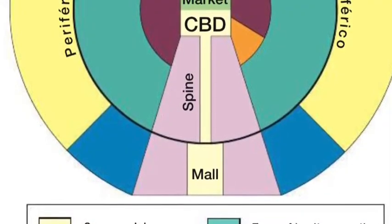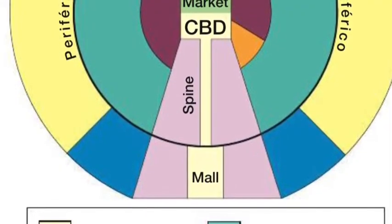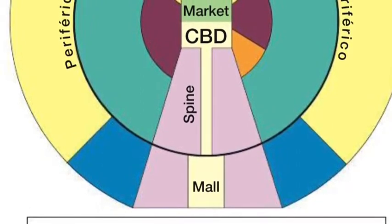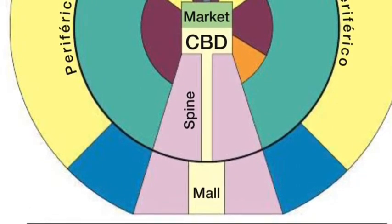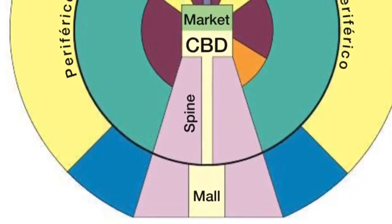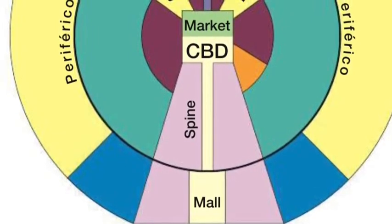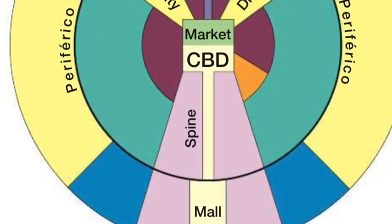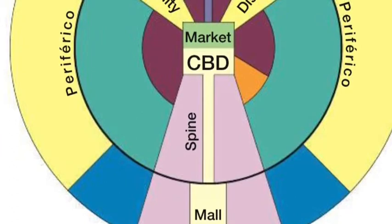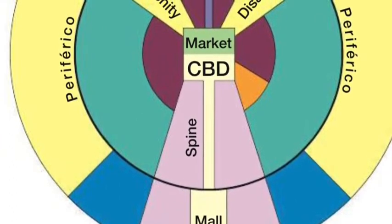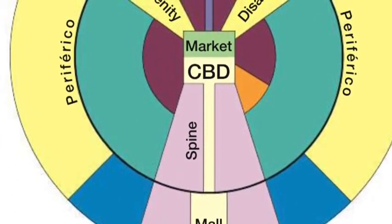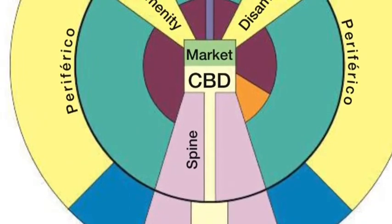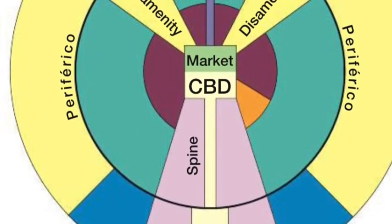Another way that cumulative causation is represented could be through the sector model. When a few economically advantaged people move into the inner area of the city, they create an area where a lot of other richer people would want to live. With other areas of the city surrounding them on either side, they were forced to grow out in a column extending from the inner city to the outskirts.